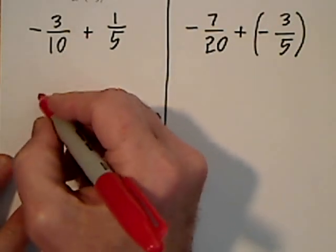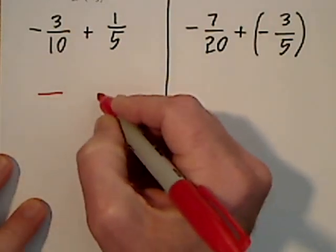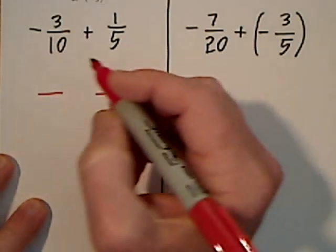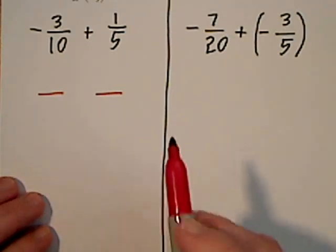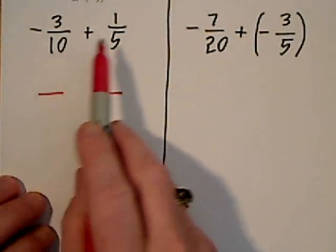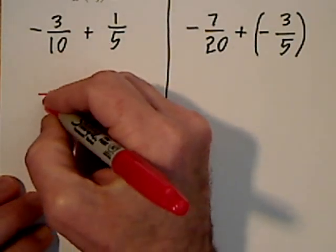Whenever you're trying to add or subtract fractions, you have to have common denominators because you're going to keep the denominators. With ten and five, the common denominator is ten.